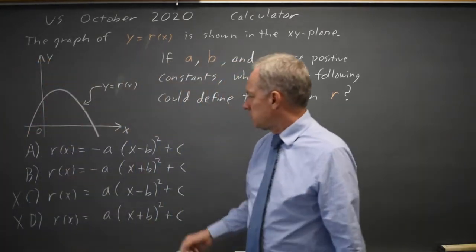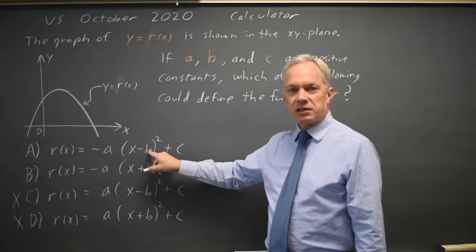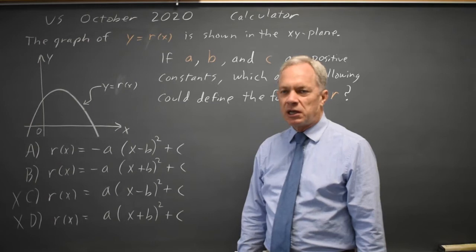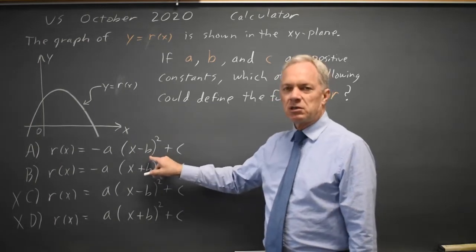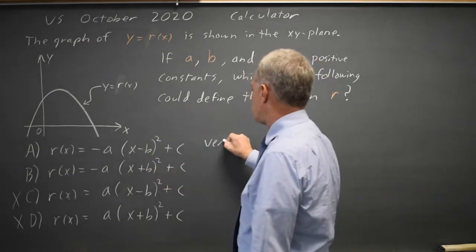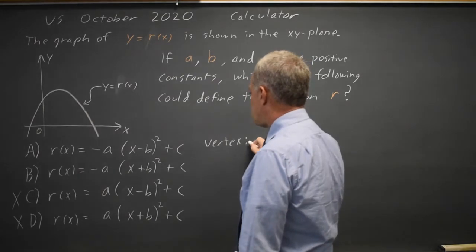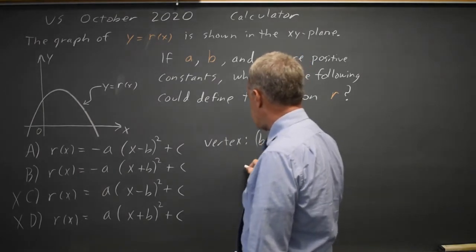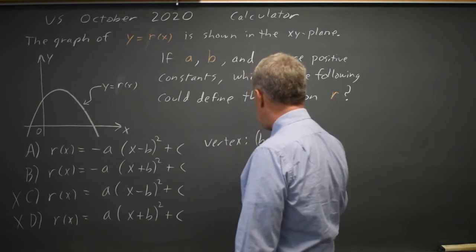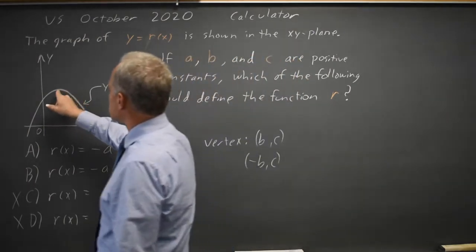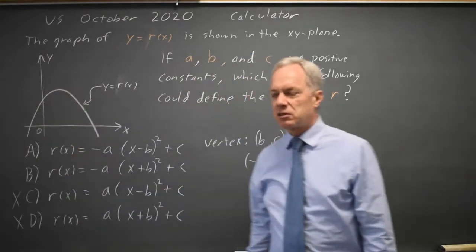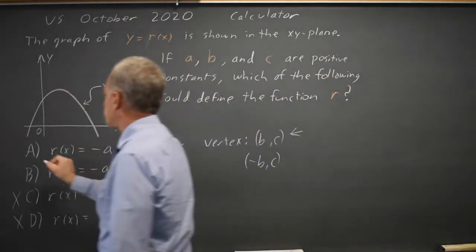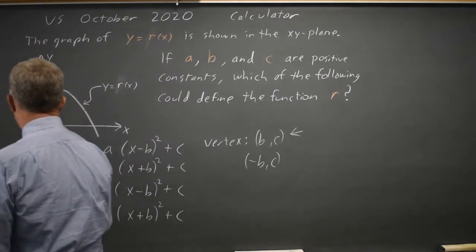The question is, if b is positive, is it x minus b quantity squared or x plus b quantity squared? And this is vertex form. The vertex is the point b, c, or in this case, negative b, c. Since the vertex is in quadrant one where both b and c are positive, choice a is the correct answer and b is not correct.